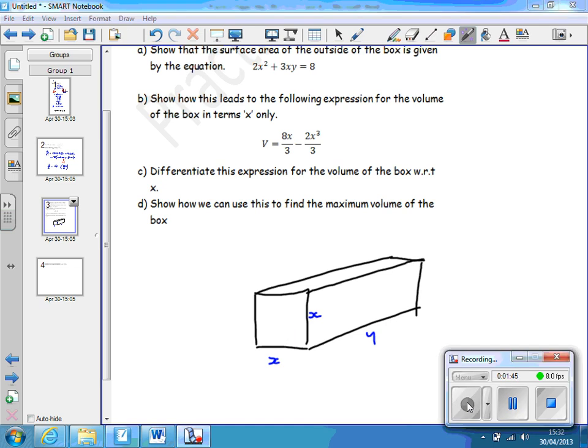Part B says, show how this leads to the following expression for the volume of the box in terms of x only. Well, if we think about an expression for the volume of the box, here's the box, what will that volume be? The volume of the box is given by x squared, the area of the end, times the length, y.